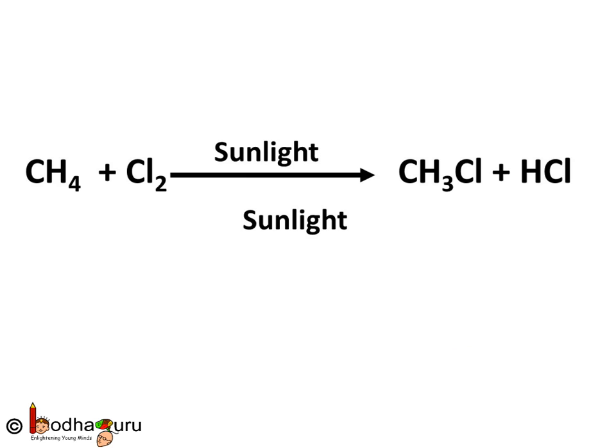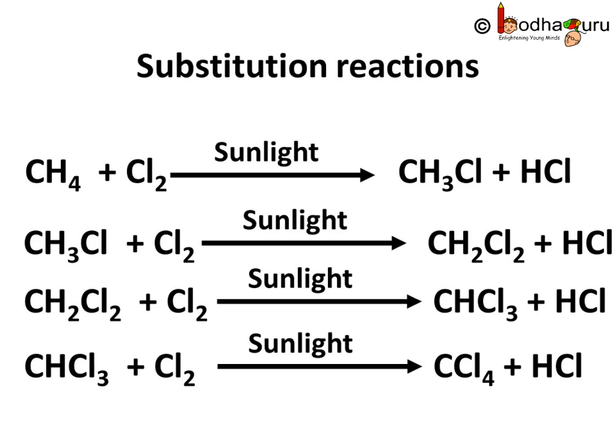Saturated hydrocarbons are fairly inactive and stable. But in presence of sunlight, if chlorine is added to an alkane, it replaces hydrogen from it one by one. Thus, in this process we get many products. This is called a substitution reaction because chlorine substitutes the hydrogen atom in the given hydrocarbon.